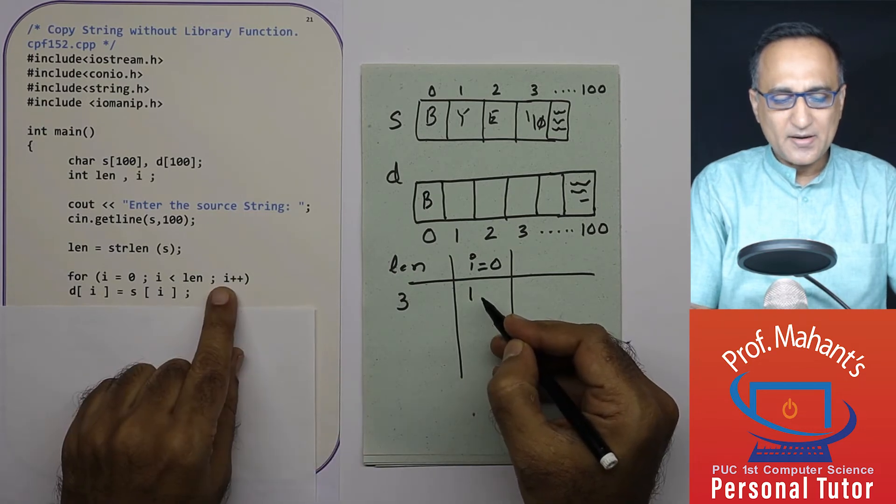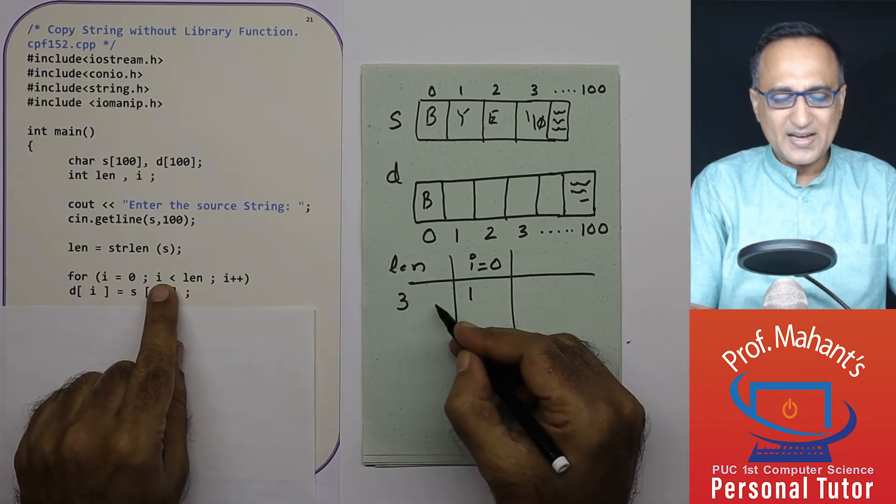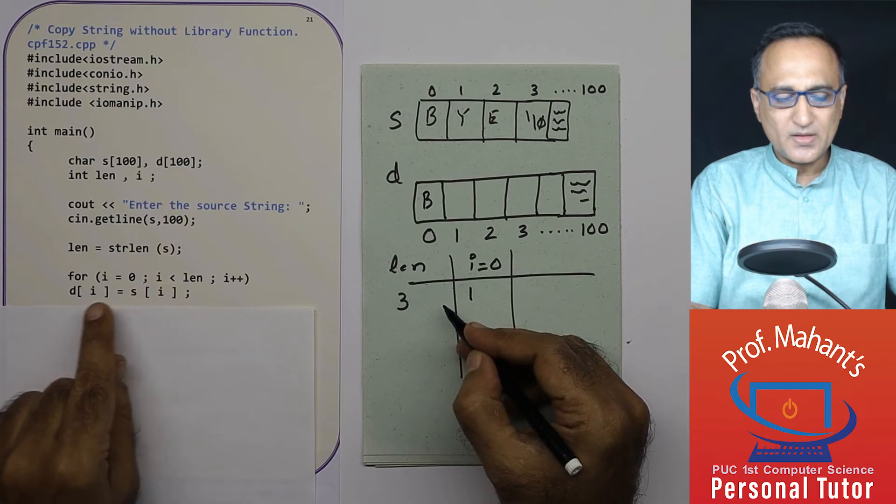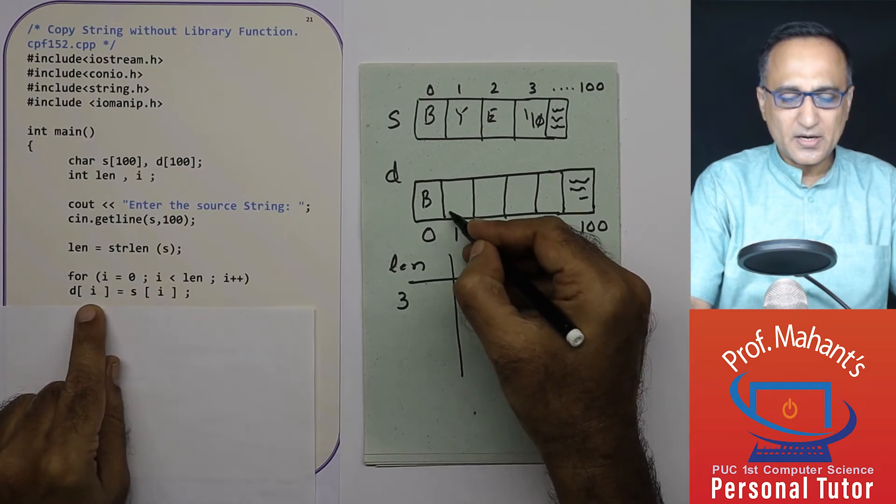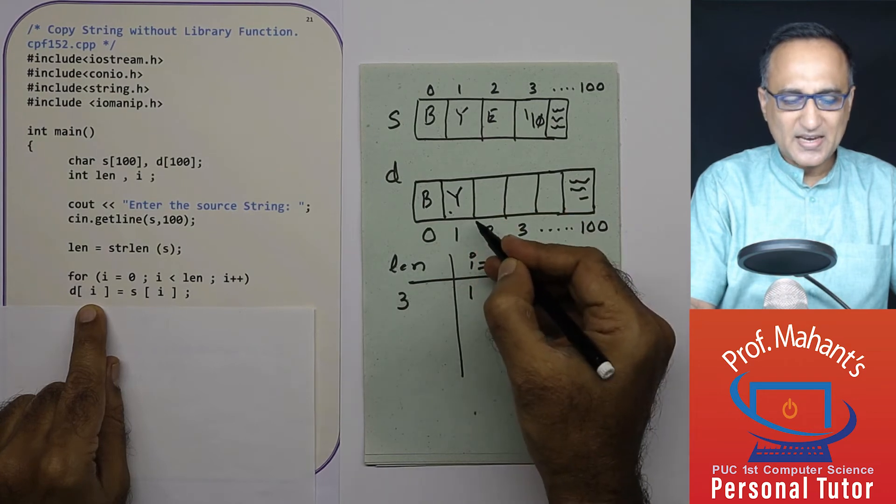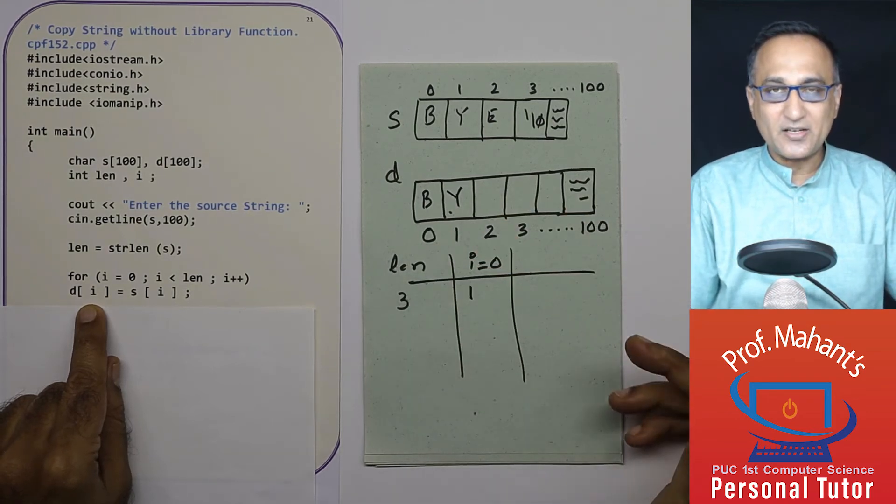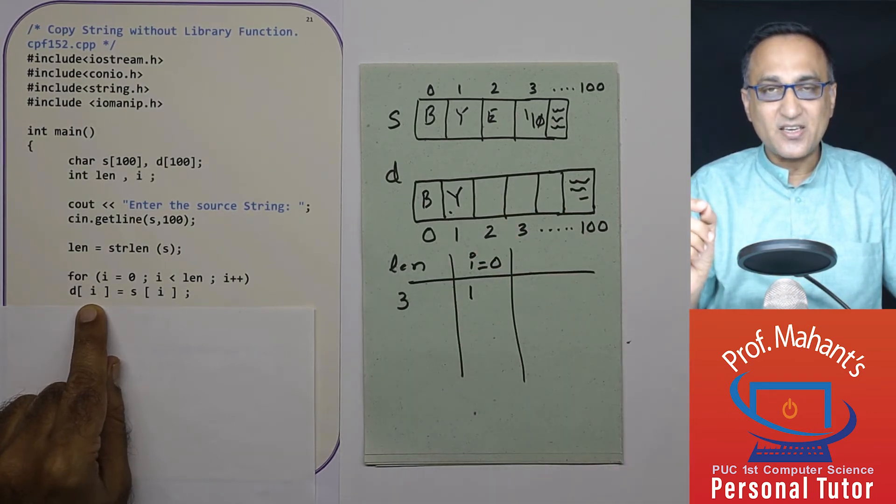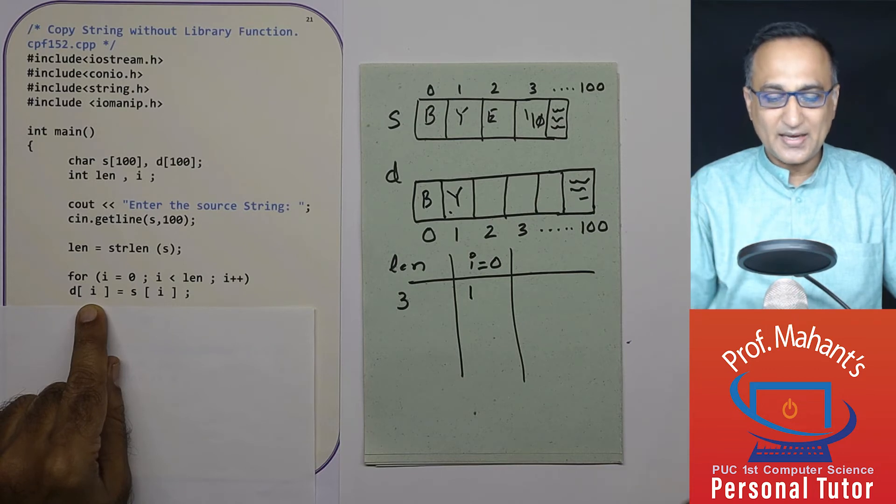i is increased by one and then I check this condition. One less than three is still true. D of one is this particular position. S of one is Y. So I can assign and copy it character by character. You cannot assign the entire string, you can assign character by character.